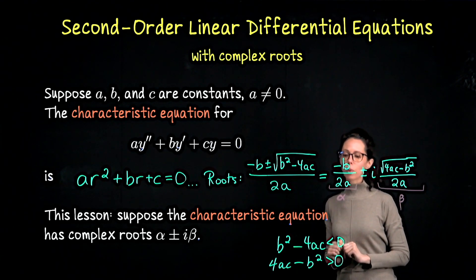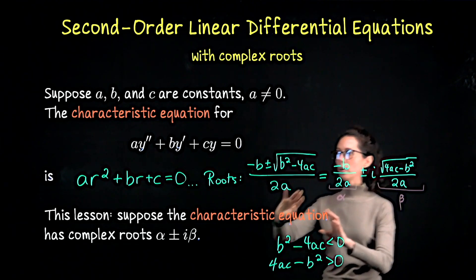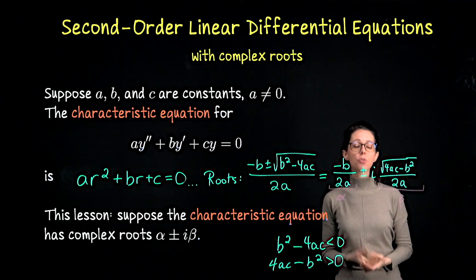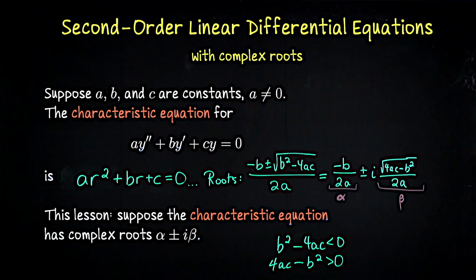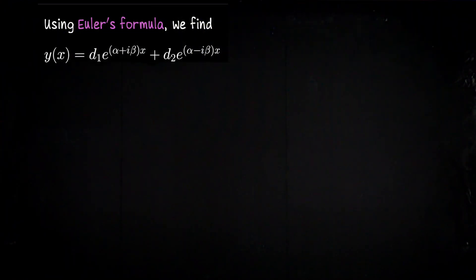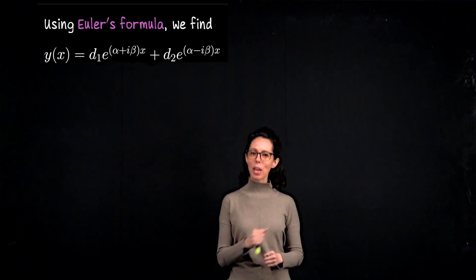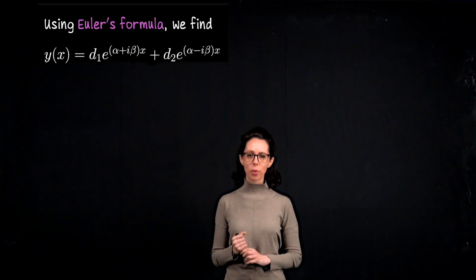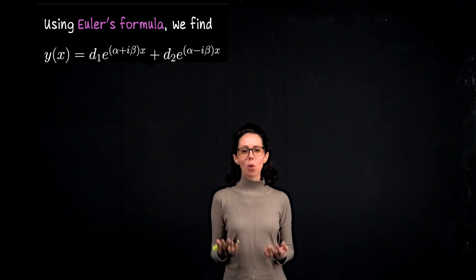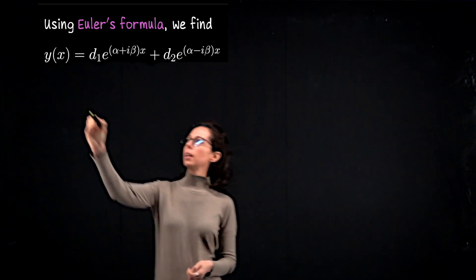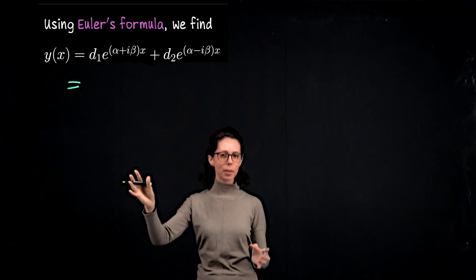With complex roots, we want to derive the general form of the solution — a linear combination of two fundamental building block solutions — and then work through one example. This derivation won't require as much work as you might think, because we handled most of the computation in the previous video on pure imaginary roots. The key observation is that the property of exponents allows us to break up the exponential terms into a product.